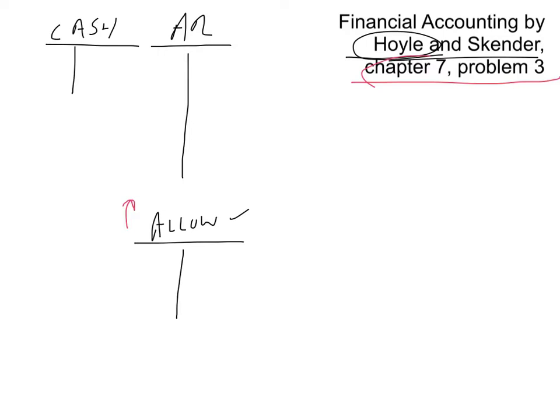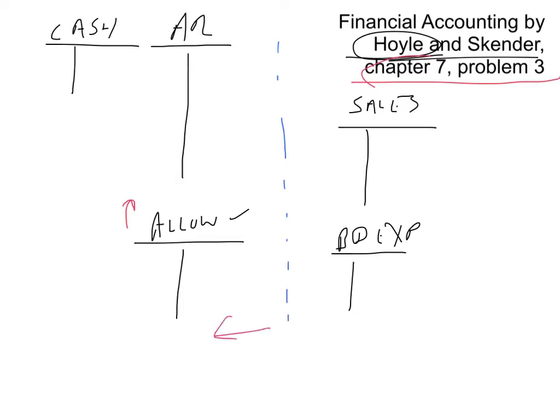The accounts receivable shows how much people owe you, and the allowance for doubtful accounts is the balance of what you think will not be collected. When you report your balance sheet, you'll subtract the allowance from accounts receivable, and that figure is called the net realizable value — basically an estimation of the amount you think will be collected. You'll also need a sales T-account and a bad debt expense T-account. I like to group the balance sheet accounts on one side and the income statement accounts on the other, which helps keep things separated correctly.